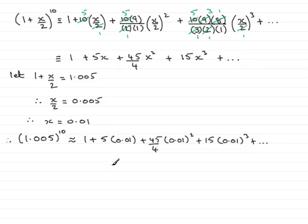So working this out, we have 1 plus 0.05. 45 over 4 times 0.01 squared comes out as 0.00125. And finally, 15 times 0.01 cubed, very easy to do, 0.0000015, and so on.